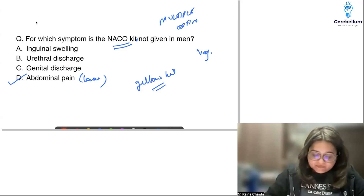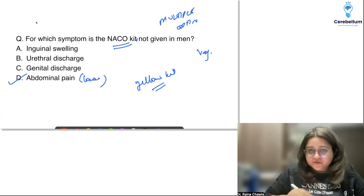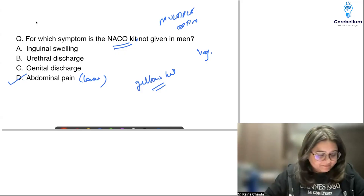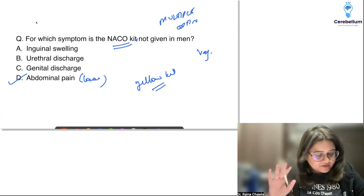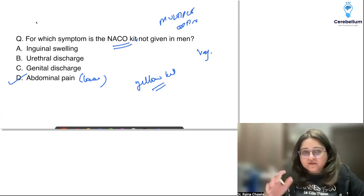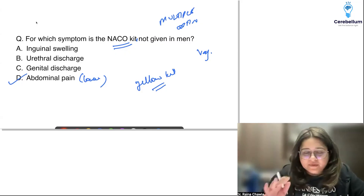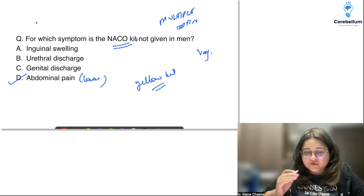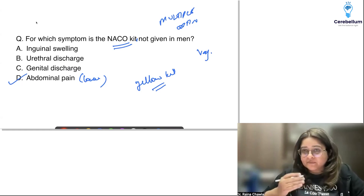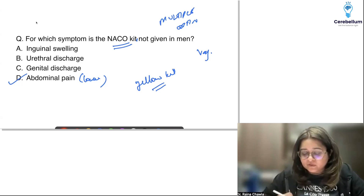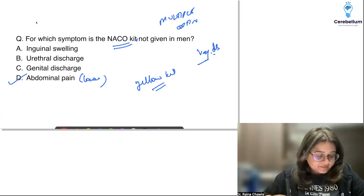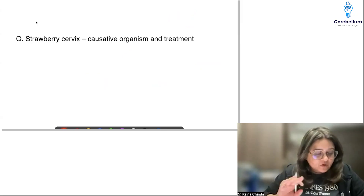It was a multiple-option correct answer. The syndromic approach option was not there. Remember: the yellow kit for PID (lower abdominal pain symptom) and the green kit for vaginal discharge are specific for women. NACO kits are the same as the STI kits.